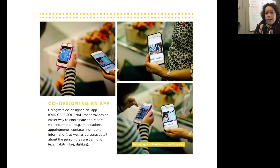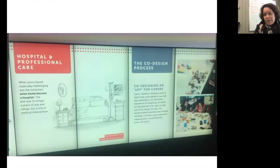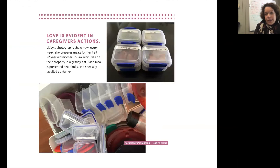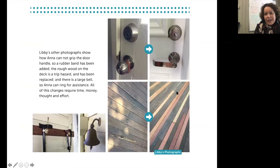You can see the digital images. This is 'when home becomes a hospital bed' — on the left is a sketch of a normal bed and the other side is a hospital bed, just a real challenge. You can see love in the caregiver's actions in the photos they took. This is an older woman, the mother-in-law who lived on her daughter-in-law's property and labels all the meals she cooks for her. We also show the challenge of home maintenance, and here we are with participants celebrating.